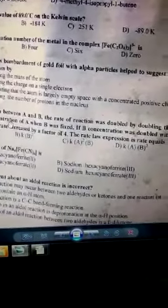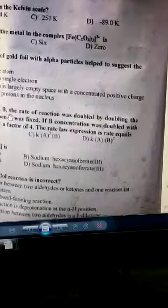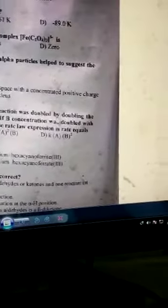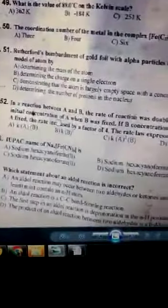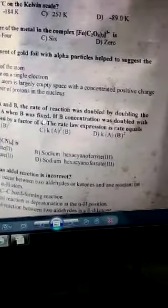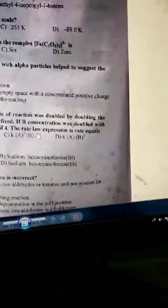In a reaction between A and B, the rate of reaction was doubled by doubling the initial concentration of A when B was fixed. If B concentration was doubled with A fixed, the rate increased by a factor of 4. The rate expression is rate equals...